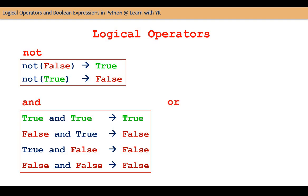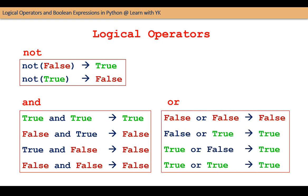The operator OR also joins two conditions and returns false if both the conditions are false, otherwise it returns true. It means that false OR false is false, false OR true is true, true OR false is true, and true OR true is also true.